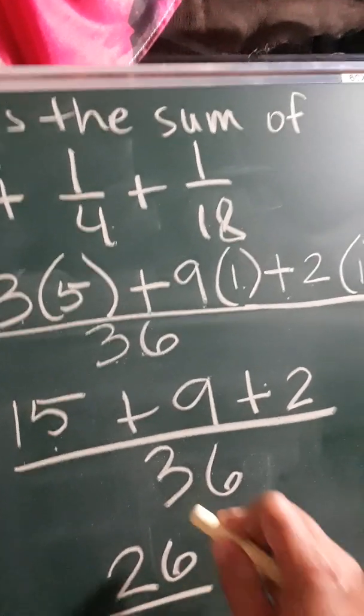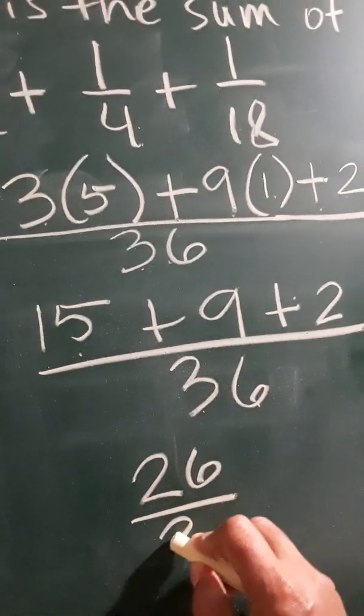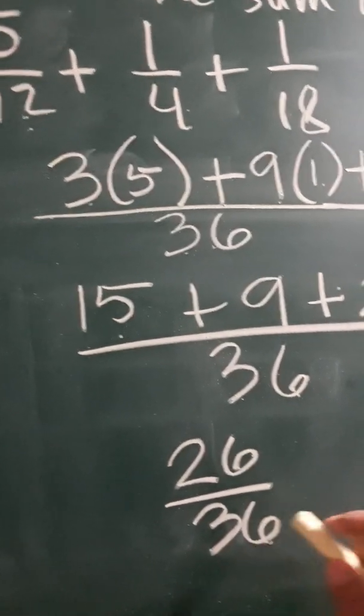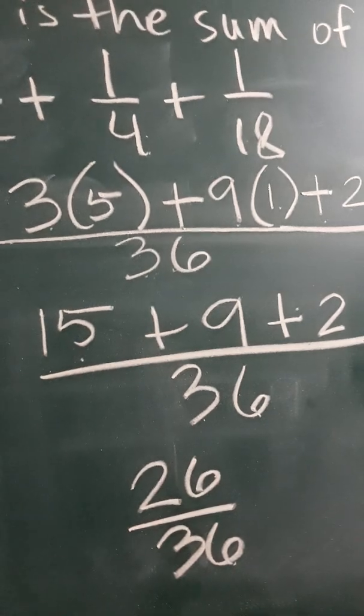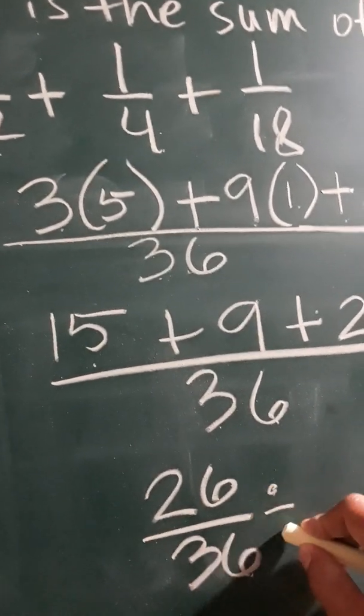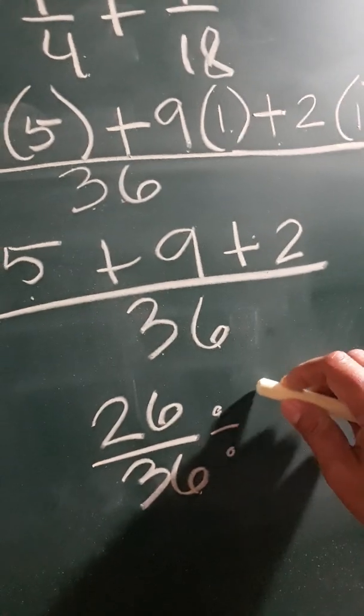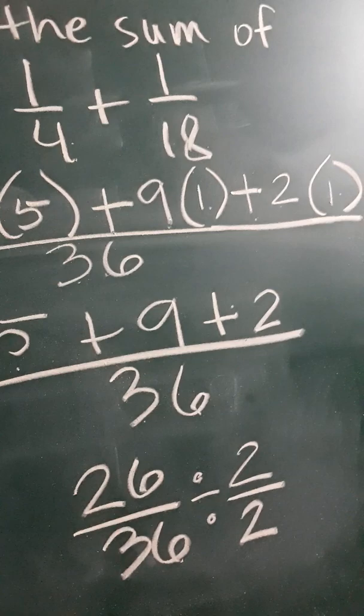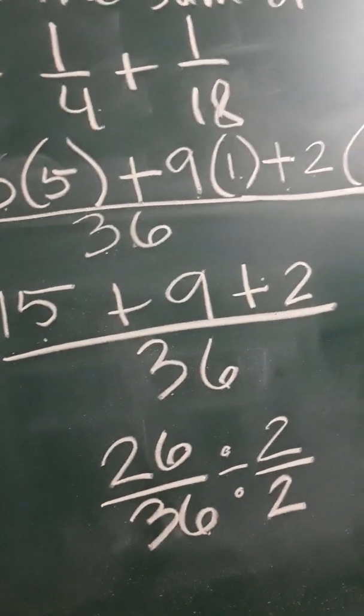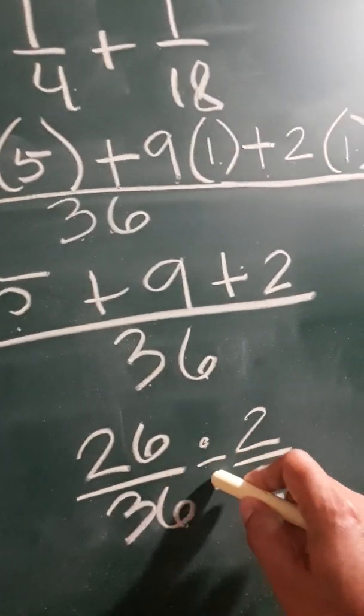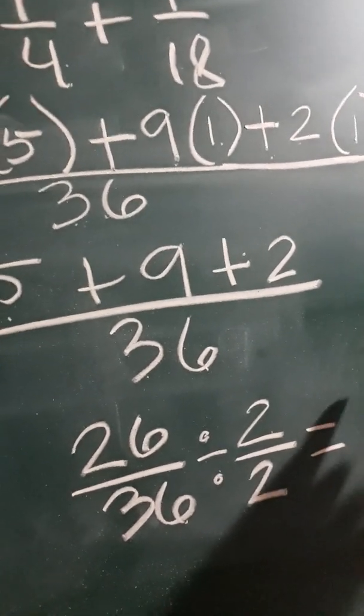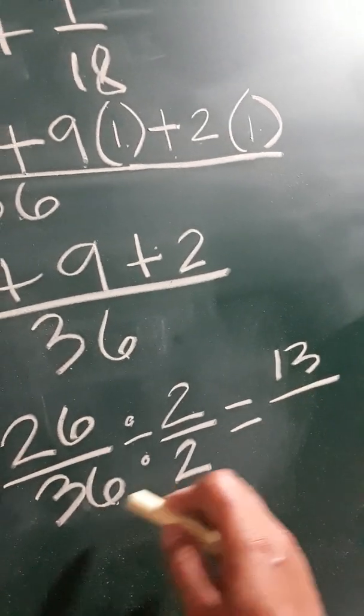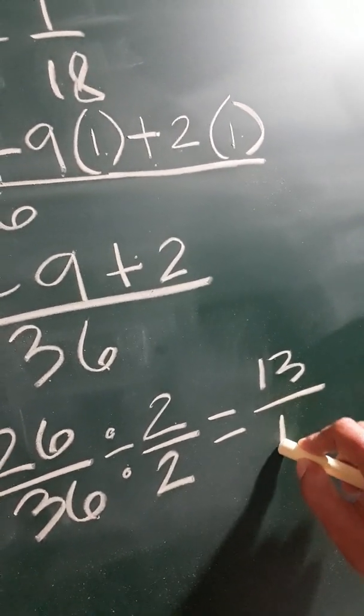26 over 36. If you notice, 26 and 36 are both divisible by 2, so divide by 2 both the numerator and denominator so that you will have an answer in lowest terms. So 26 divided by 2 is equal to 13, and 36 divided by 2 is equal to 18.